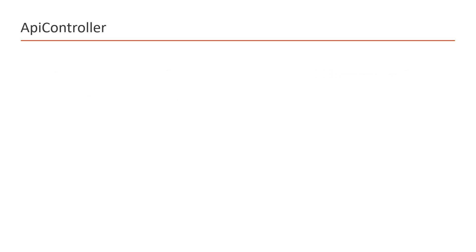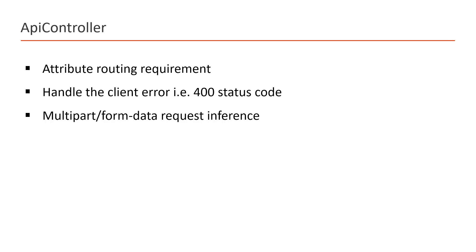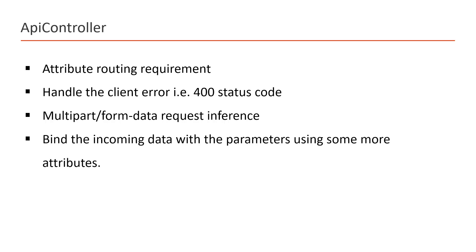The ApiController attribute provides support for attribute routing. If there is some error in the client data — that is, a 400 error — this ApiController attribute will handle everything automatically. It also provides support for multi-part form data requests, which is the header we use in HTTP requests. Additionally, it provides support for mapping resources to the parameters we use in the controller class.